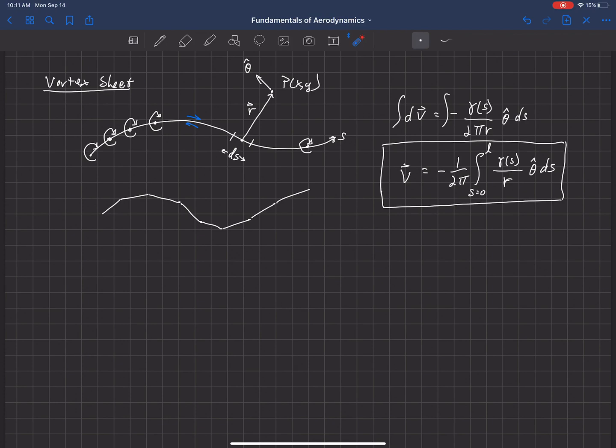In the limit as the number of panels go to infinity, then we would get back the influence of the vortex sheet. So let's work through that briefly here. We're going to say that we have a vortex panel.